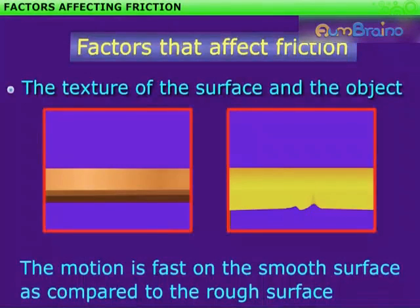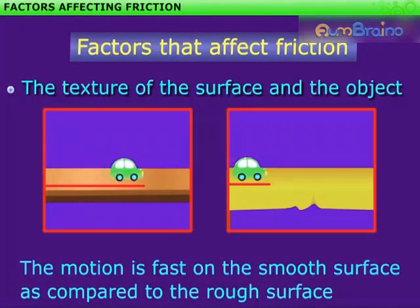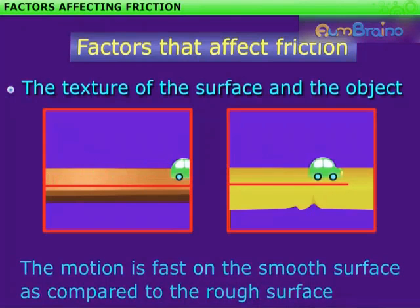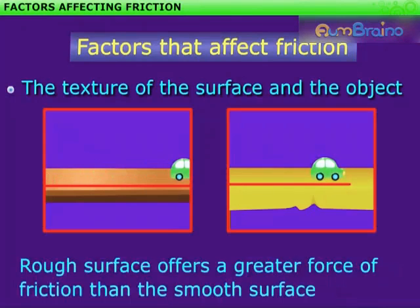This proves that the motion is fast on the smooth surface as compared to the rough surface. Hence, we conclude that rough surface offers a greater force of friction than the smooth surface.